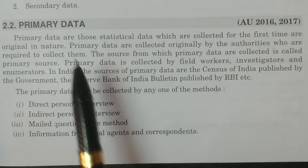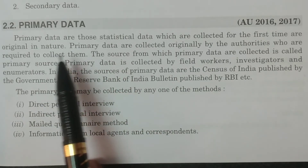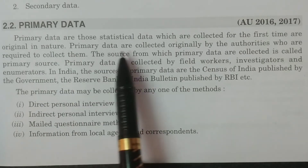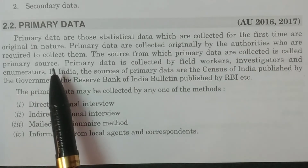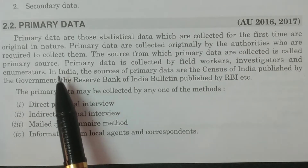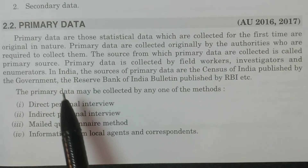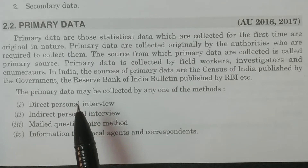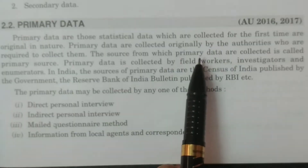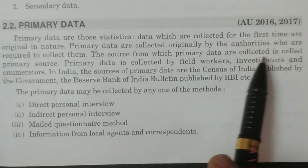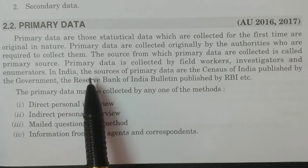What is meant by primary data? Primary data is nothing but the data collected for the first time, original in nature. If for any kind of statistical inquiry the data is collected for first time, then such kind of data is known as primary data.